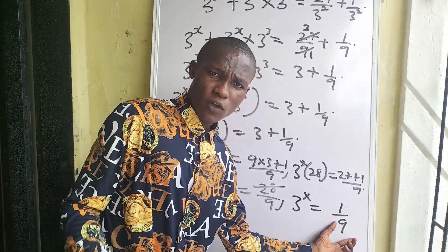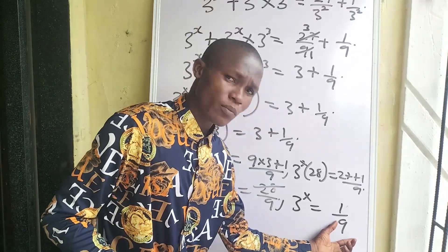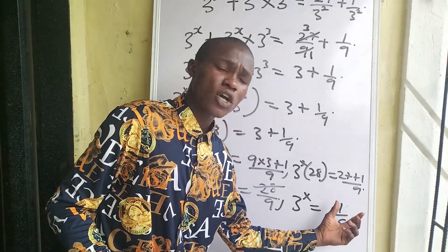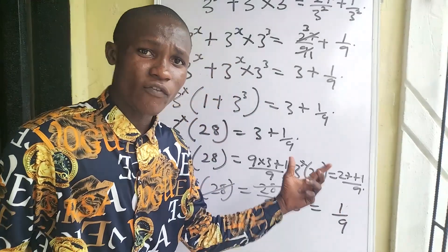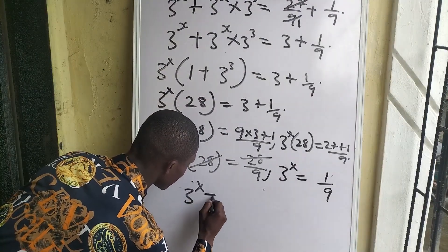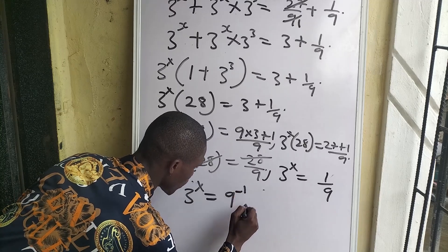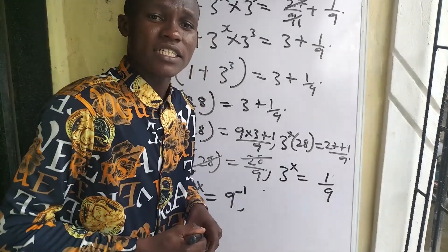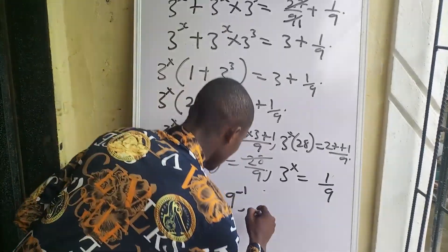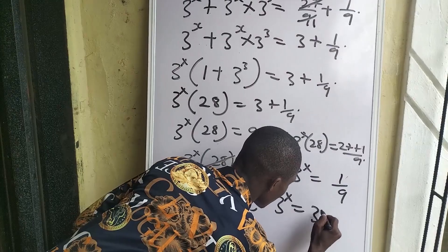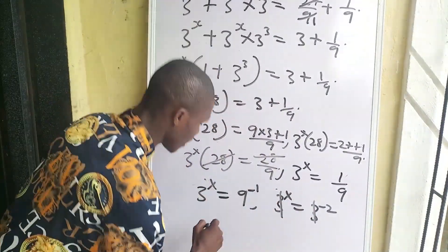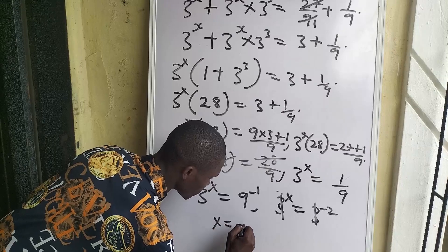We want to make the denominator become a numerator. By bringing the denominator up, we put a negative value at the power. So we write 3 to the power of x equal to 9 to the power of minus 1. Since 9 equals 3 to the power of 2, we can write 3 to the power of x equals 3 to the power of minus 2. The bases are the same, so the powers cancel and we get x equals minus 2.